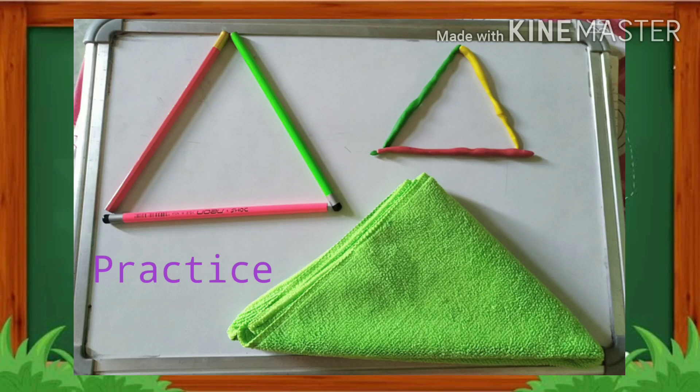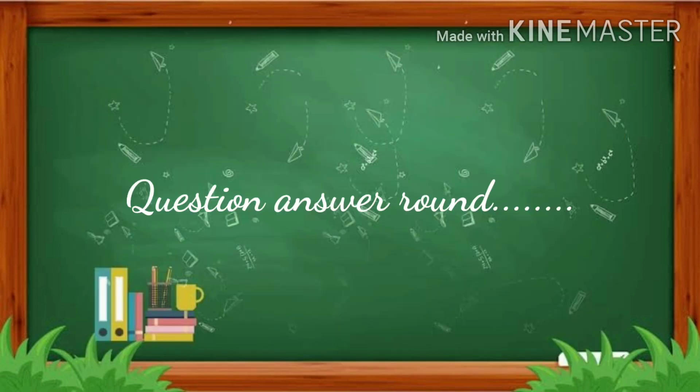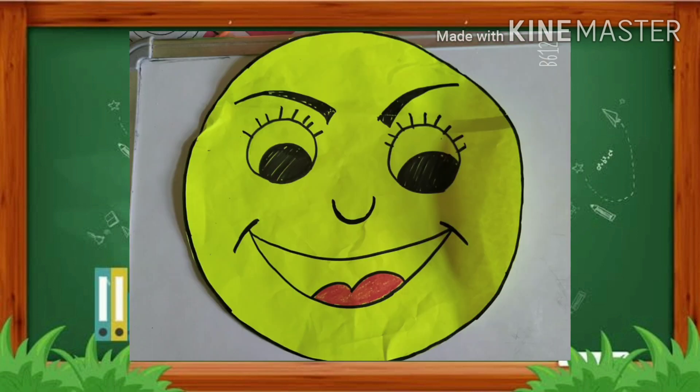So we can easily make a triangle shape with the help of a pencil, clay, and a handkerchief. Children, you also try this at home! Now it's question and answer round — are you ready? Let's start!